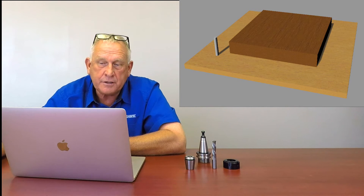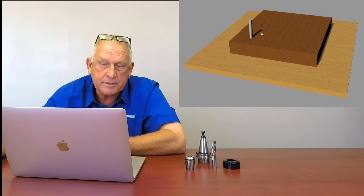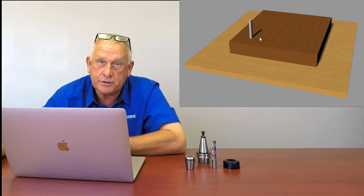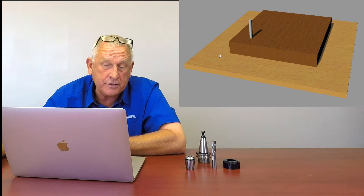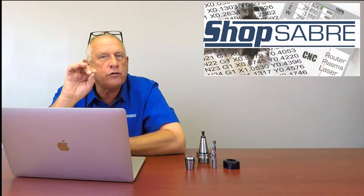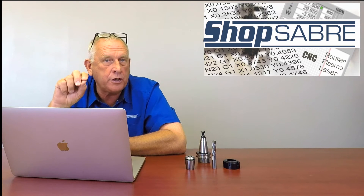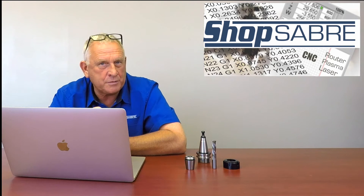If I'm touching off to the top of the material instead, then every time the material changes I have to go in and touch tools off. When I tell it a certain thickness, it's got to be that thickness. Whereas if I touch off to the spoil board, there's a lot more room for error. So the first thing you do is make that decision as to whether you want to touch off to the top of the material or the top of the spoil board.